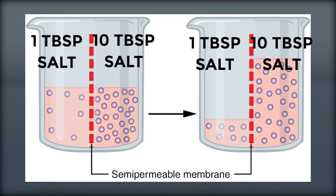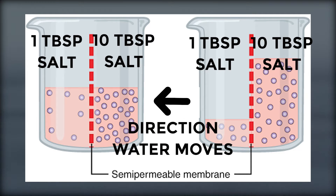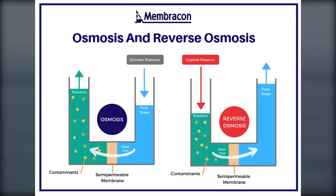Reverse osmosis, as the name suggests, is the opposite of osmosis, so we change the direction of the solvent through the semi-permeable membrane. Instead, the water moves from the side with 10 tablespoons of salt, which has the higher concentration, to the side with 1 tablespoon of salt, which is lower in concentration. This is what is happening in the reverse osmosis filtration system, but instead of salt being dissolved in the water, it's contaminants dissolved in the water. The side with the higher concentration of contaminants is left behind on one side and can be disposed of.